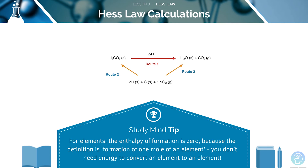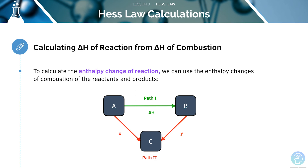Remember, the enthalpy of formation for an element is zero, since no energy would be required to convert an element into an element. If we have the reaction A goes to B, we can form a Hess's triangle. Using this triangle, again we can calculate the enthalpy of combustion of A and B.